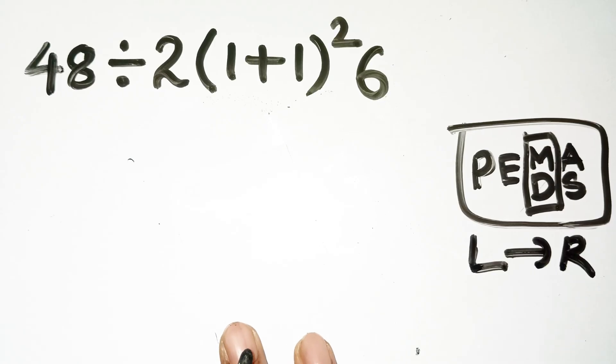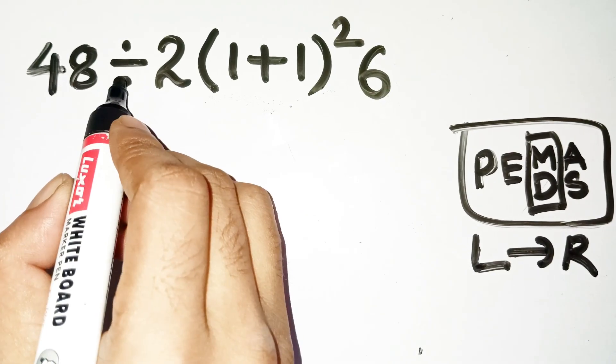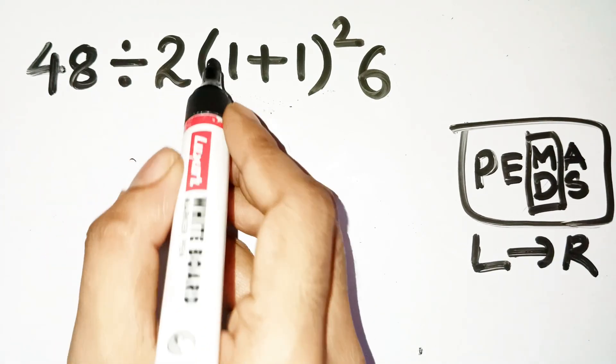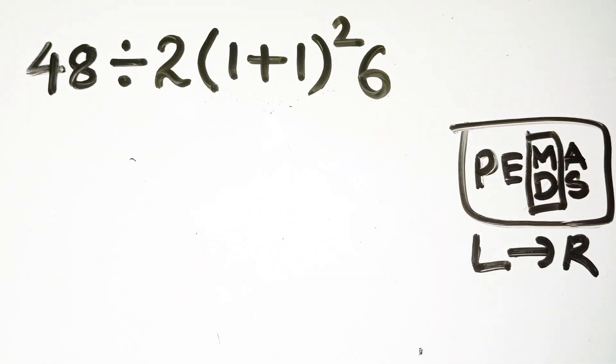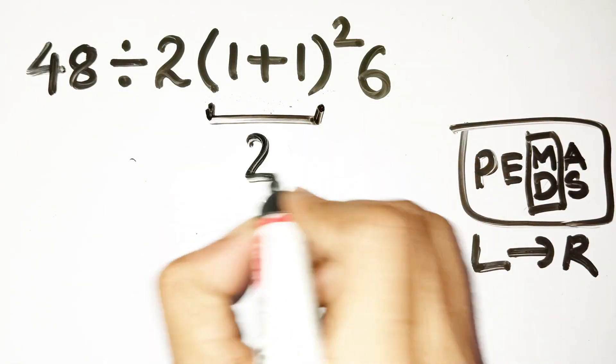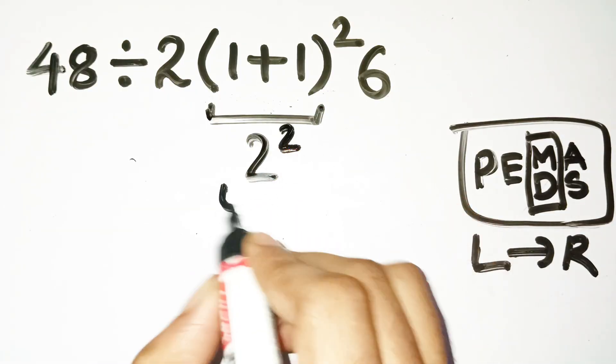So let's slow down and actually follow that. We've got 48 divided by 2 times, open bracket, 1 plus 1, close bracket, squared, times 6. Inside the bracket, 1 plus 1 is 2, fine. It's square gives 4.